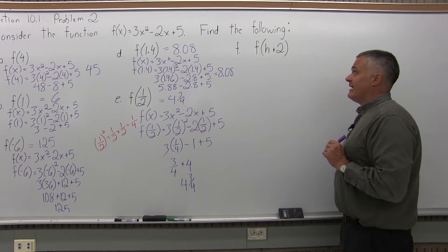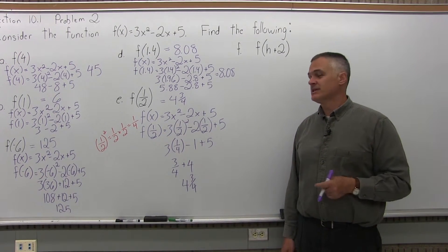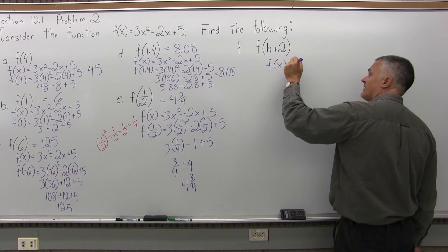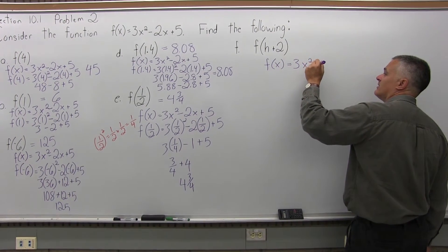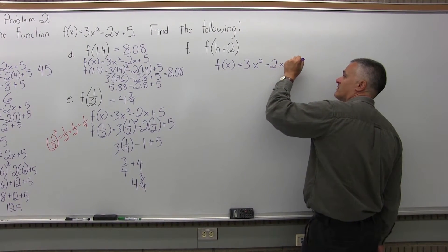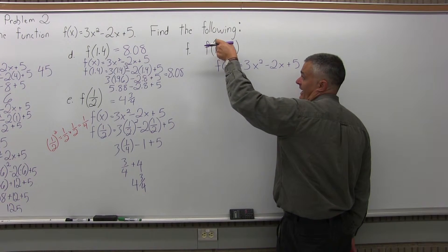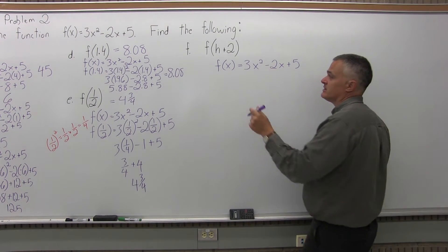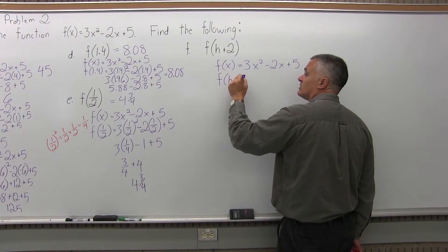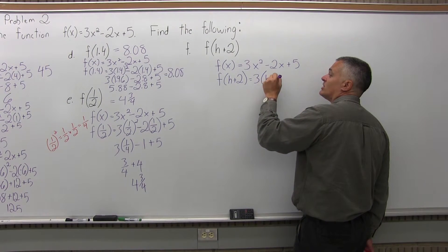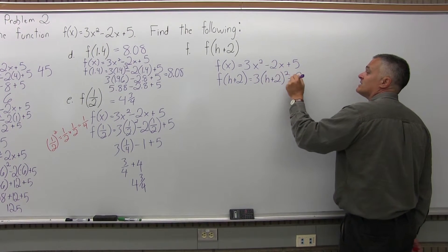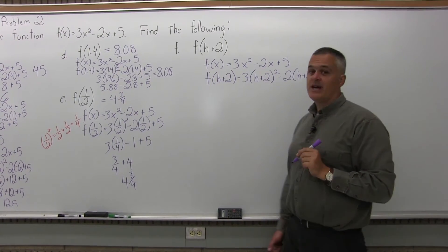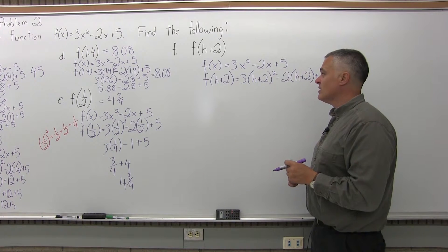Part f: find f of h plus 2 — using a different variable as input. Follow the same process. f of x equals 3x squared minus 2x plus 5. Replace every x with h plus 2: f of h plus 2 equals 3 times h plus 2 squared, minus 2 times h plus 2, plus 5. Now you need to simplify the algebra — you can't just leave it like that.